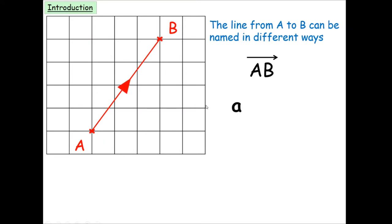Another way it's written is with a lowercase letter in bold written next to the vector — so this is vector a, and a is the same as A to B. The third way you'll also see is a lowercase letter, this time not in bold but underlined, written next to the vector. All three are equivalent.